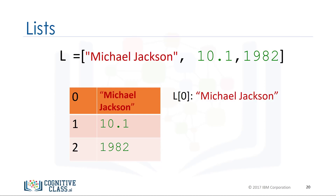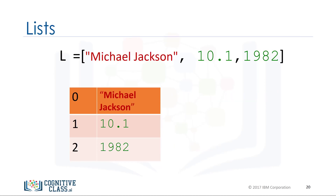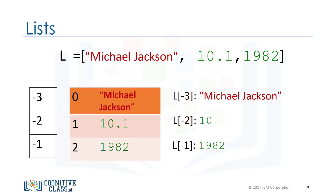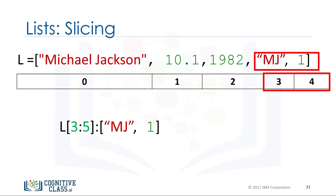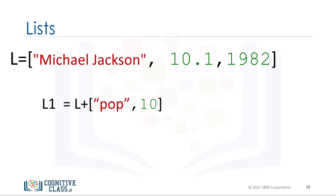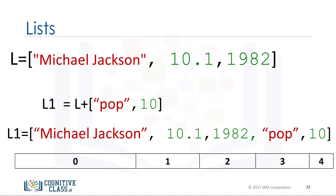The first element can be accessed by the name of the list followed by a square bracket with the index number — in this case, zero. We can access the second element and also the last element using a negative index. We can also perform slicing in lists. For example, if we want the last two elements, we use the following command — notice the last index is one larger than the length of the list. The index conventions for lists and tuples are identical. We can also concatenate or combine lists by adding them.